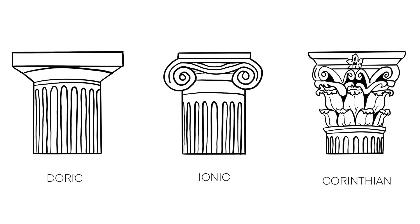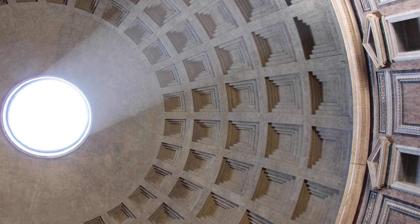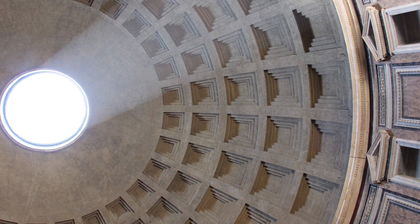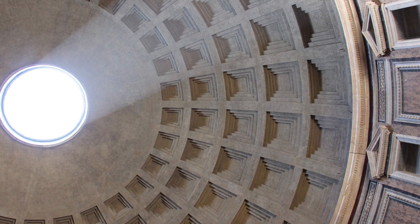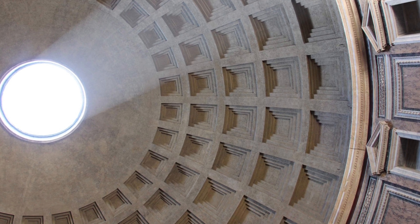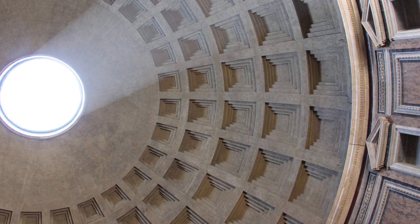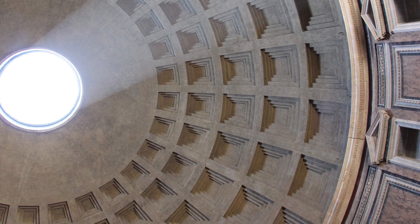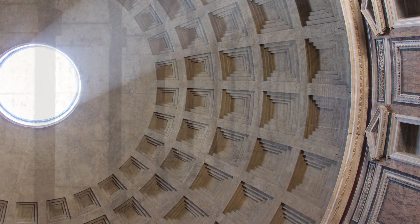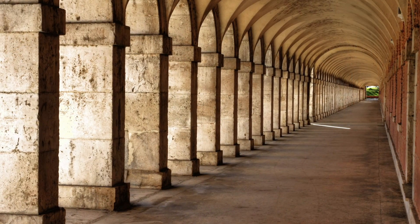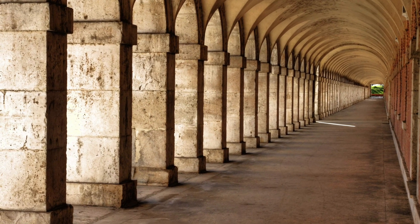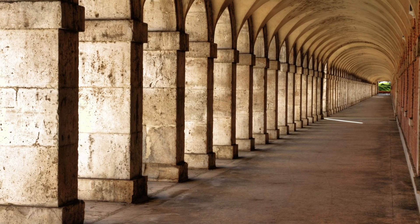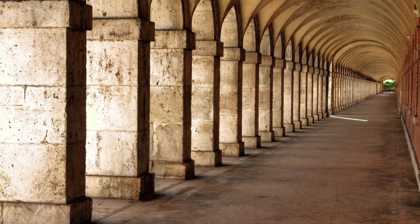During the height of the Roman Empire, classical architecture reached its pinnacle. Roman architects incorporated elements from Greek architecture while introducing their own innovations, such as the use of arches, vaults, and domes. The Romans created grand structures like the Colosseum, the Pantheon, and aqueducts, showcasing their engineering prowess and mastery of classical architectural principles.